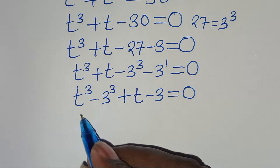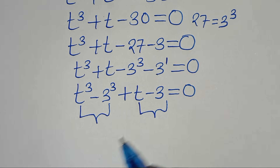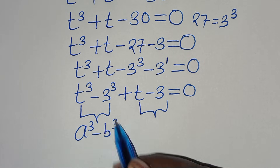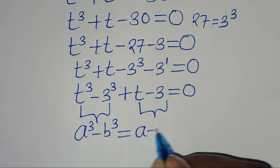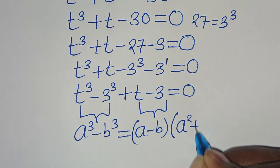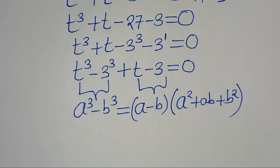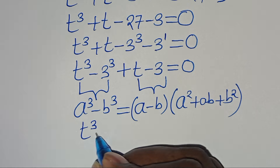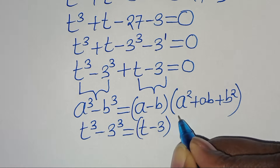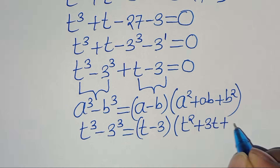We now have two parts. The first part, t³ minus 3³, is in the form a³ minus b³ — the difference of two cubes — which expands as (a - b)(a² + ab + b²). So t³ minus 3³ becomes (t - 3)(t² + 3t + 9).